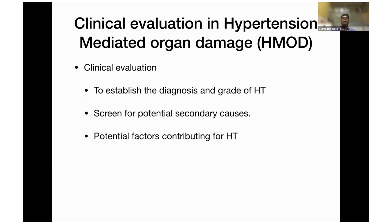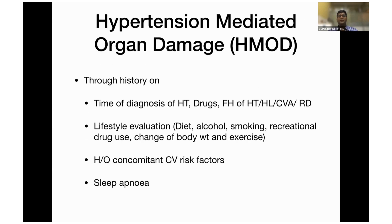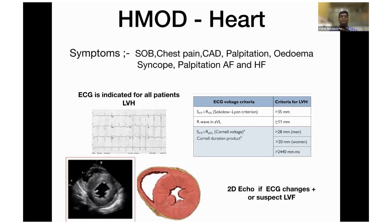You have to evaluate hypertension-mediated organ damage — persistent hypertension can damage multiple organs. You need to screen for secondary hypertension as well. Take a proper history: drugs causing hypertension, family history of stroke or hypertension, hyperlipidemia, recreational drug use, diet, alcohol, smoking, change in body weight, concomitant cardiovascular risk factors, and sleep apnea. One organ commonly affected by persistent hypertension is the heart. Most elderly patients have longstanding hypertension presenting with severe left ventricular hypertrophy, often coming after a stroke or intracranial hemorrhage.